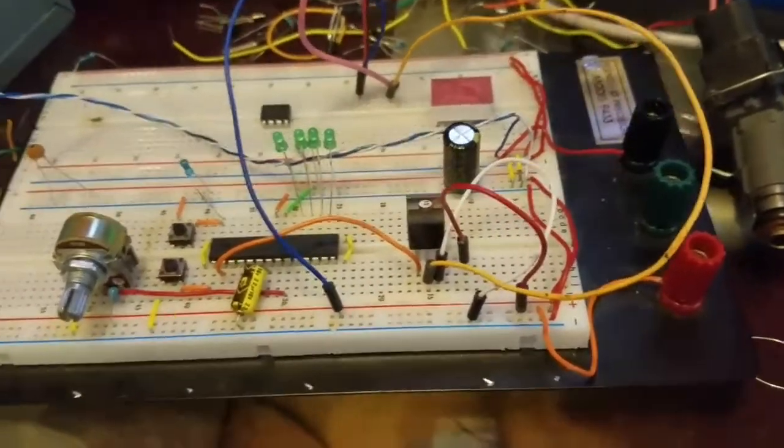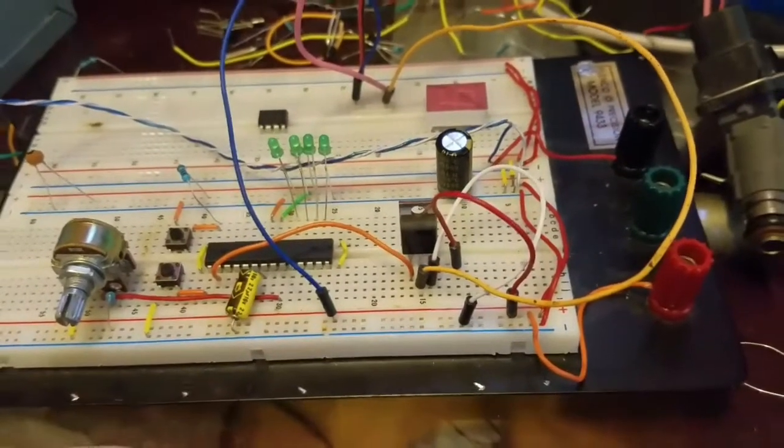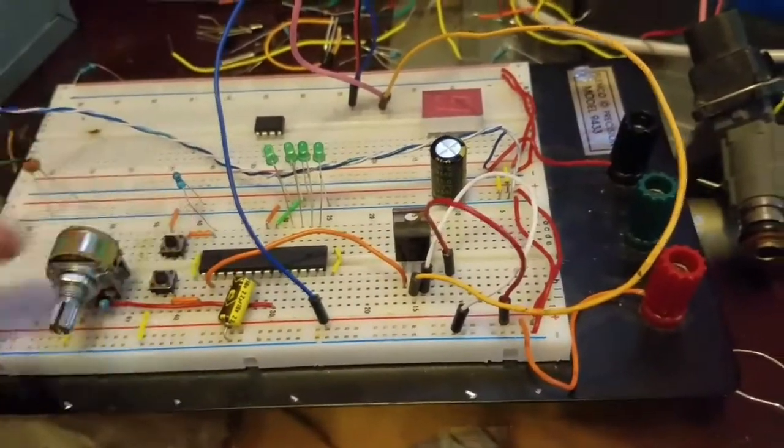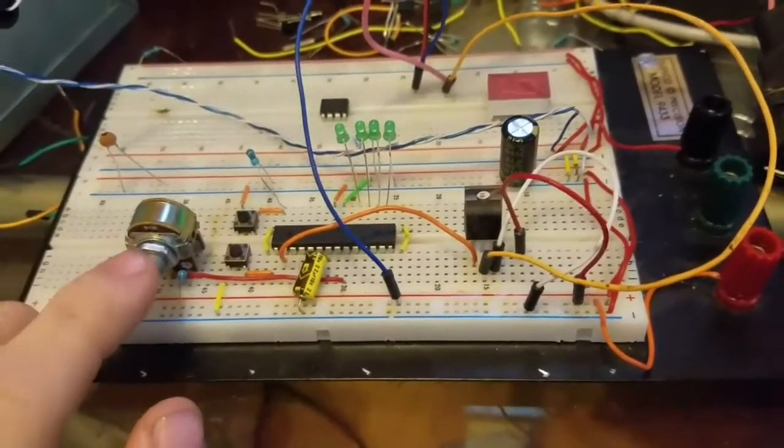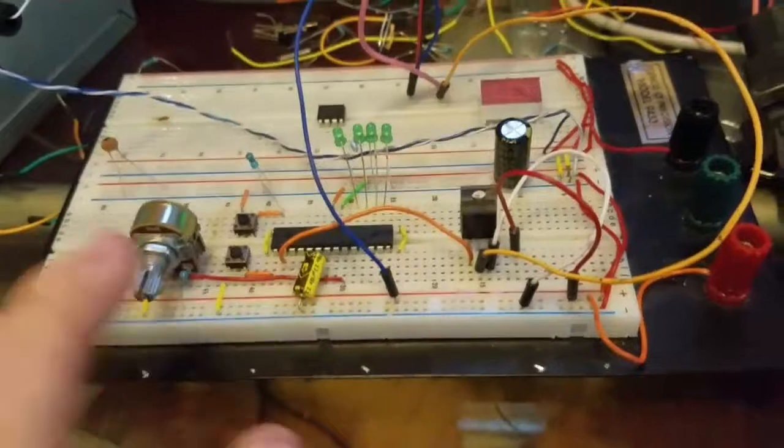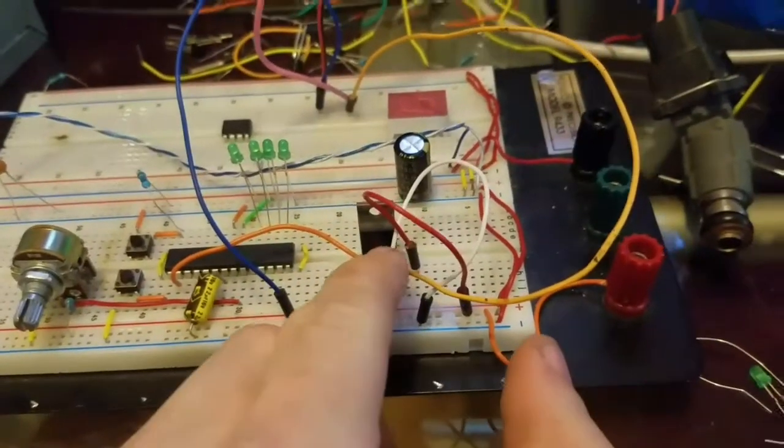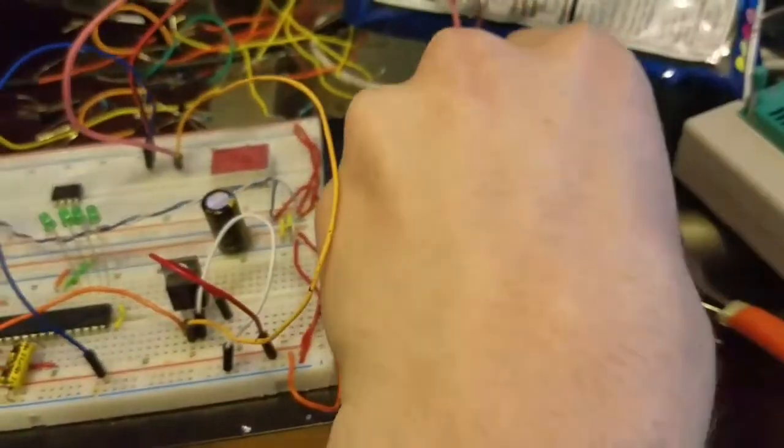So right now what I have done is I've got a microcontroller right here and the pulse width is controlled by this potentiometer and then the injector is controlled by this MOSFET and here's the injector right here.